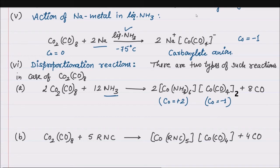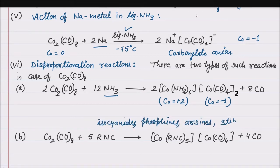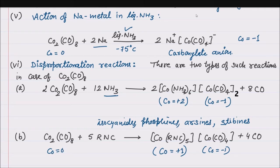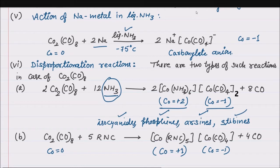Second, with isocyanides, phosphines, or even arsines and stibines, disproportionation gives penta-coordinated cobalt(I) cations, where cobalt is in the +1 oxidation state, and the other cobalt is in -1. So with strong bases, cobalt gives +2 and -1; with isocyanides, phosphines, arsines and stibines, it gives a penta-coordinated complex where cobalt is +1 and -1.